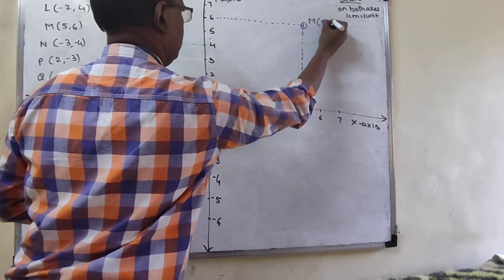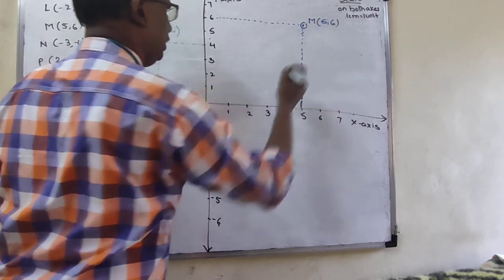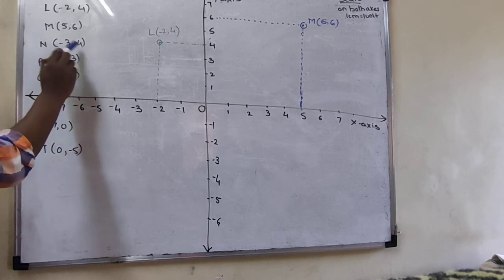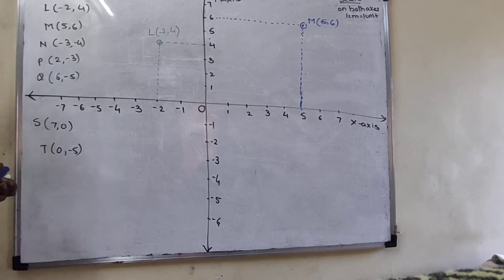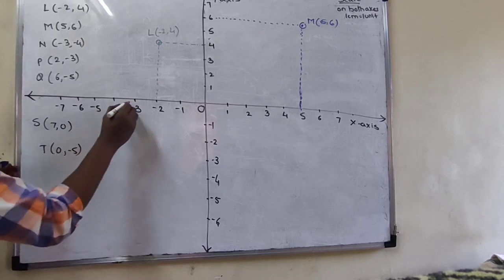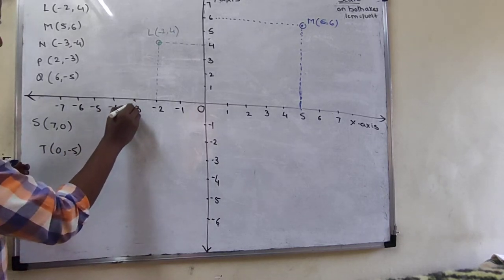Next, N(-3, -4). Both numbers are negative, so it is in the third quadrant. The x-coordinate is -3 and the y-coordinate is -4. Mark point N in the third quadrant accordingly.